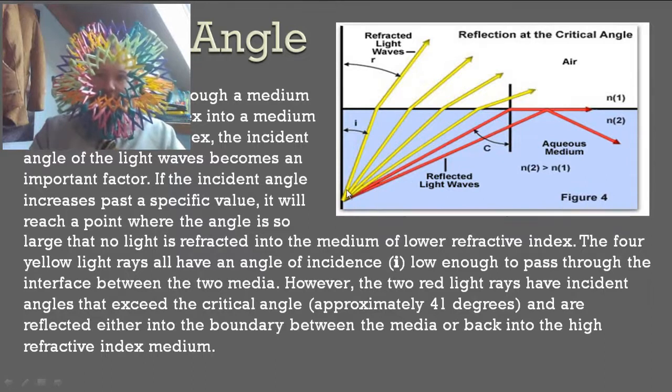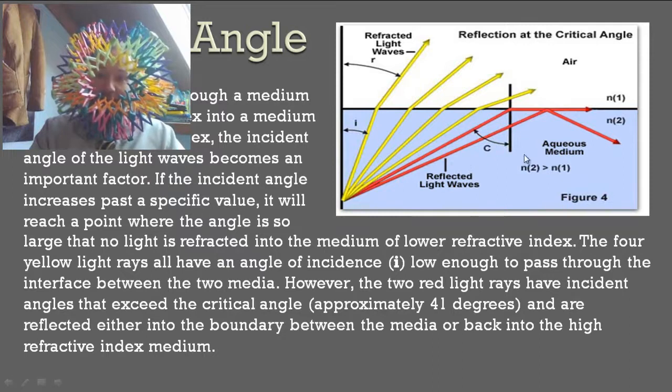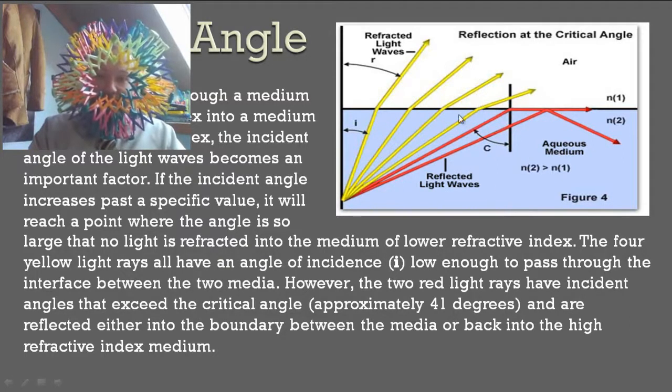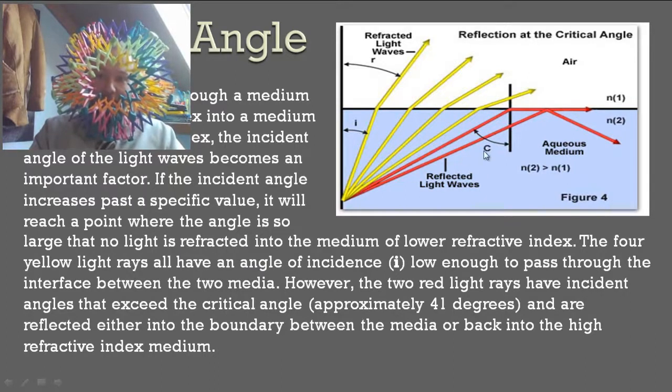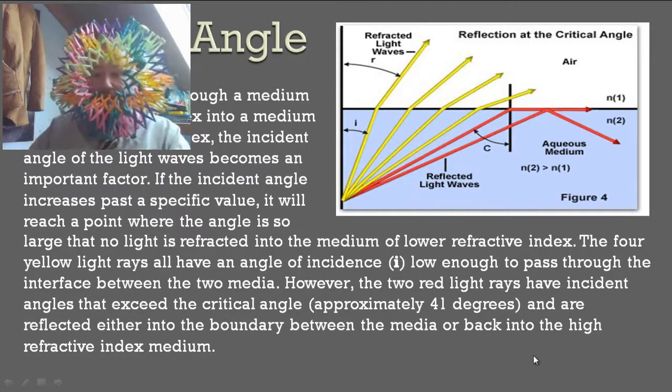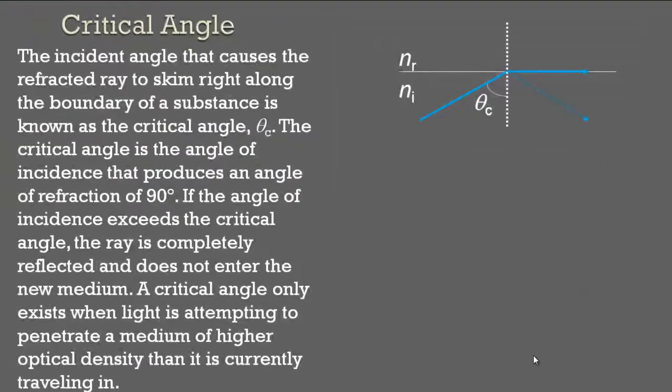However, the two red light rays have incident angles that exceed the critical angle, which is approximately 41 degrees in this picture, and are reflected either into the boundary between the media, like right along this boundary here, or back into the refractive index medium. Basically, what that says in a nutshell is at some critical angle, light is not going to escape this media right here. This light, the yellow light rays are able to escape. These red ones don't escape. They're either transferred along the surface or they go back into the original media.